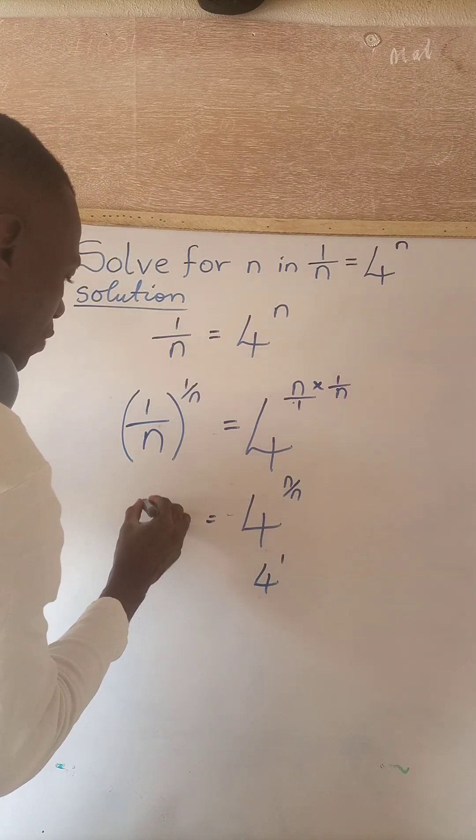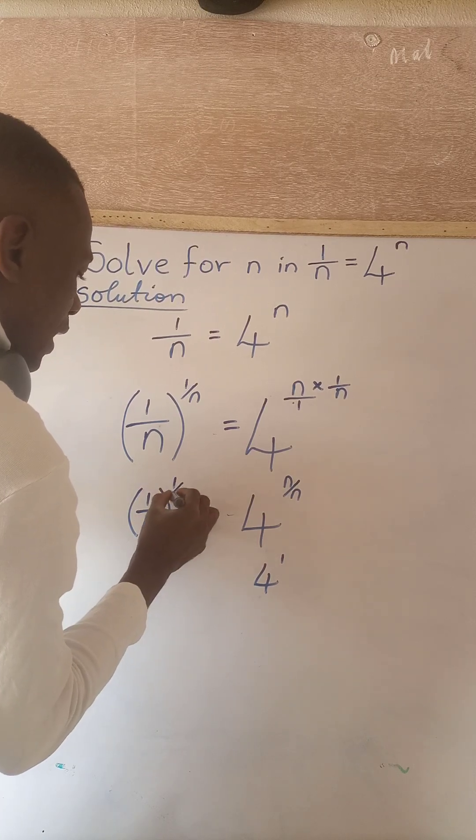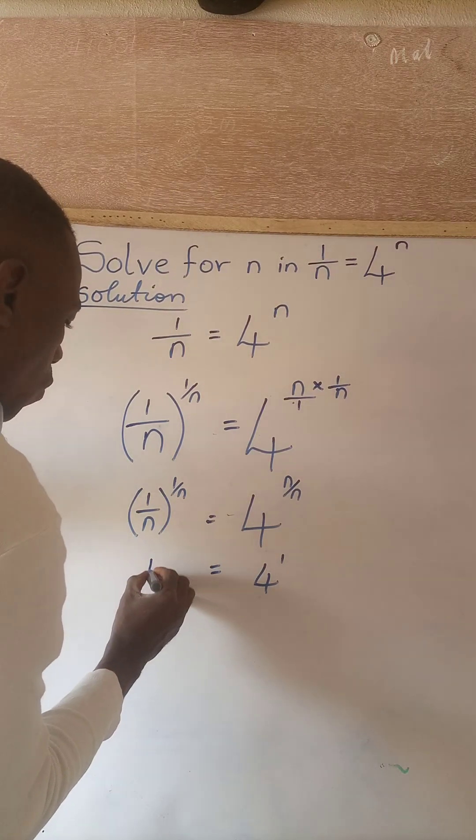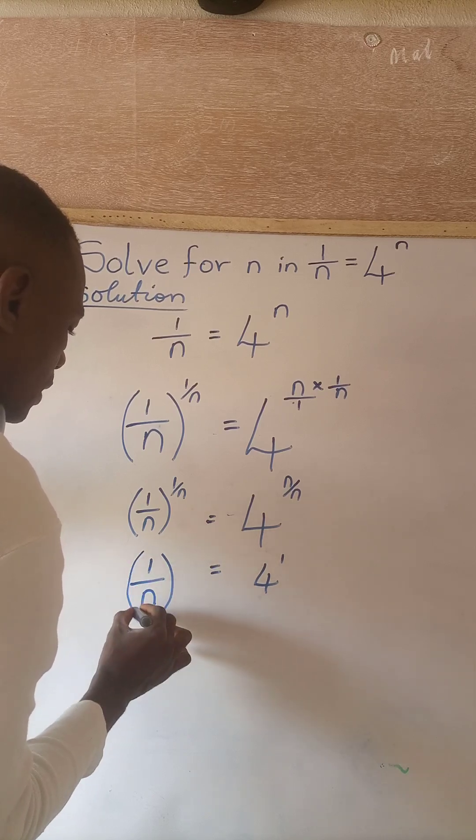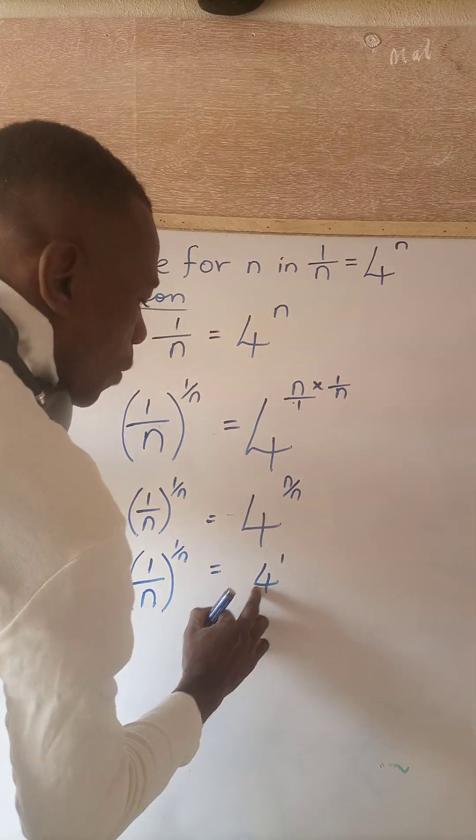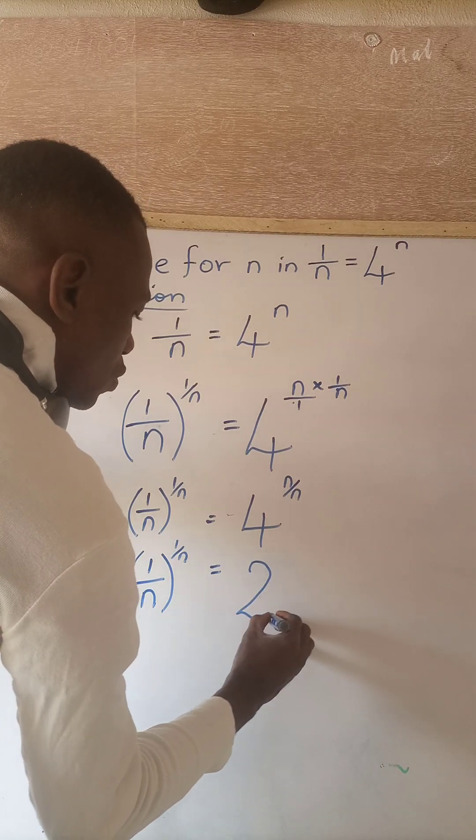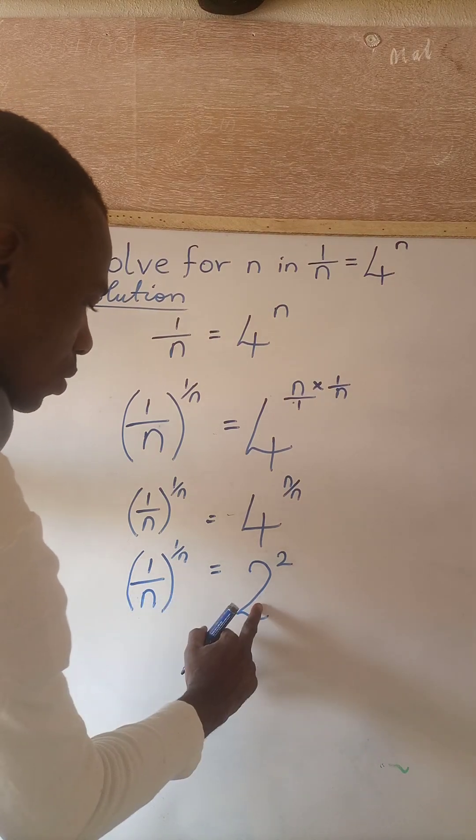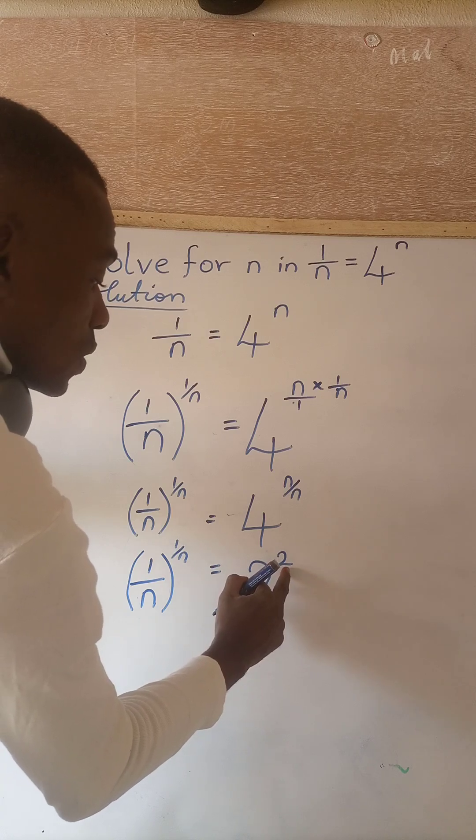So this side now we have 1 over n power 1 over n, which is the same thing as 1 over n all in brackets power 1 over n, is equal to... 4 power 1 is the same thing as 2 power 2. So we now have 2 power 2. What it means now is that 1 over n is equal to 2.